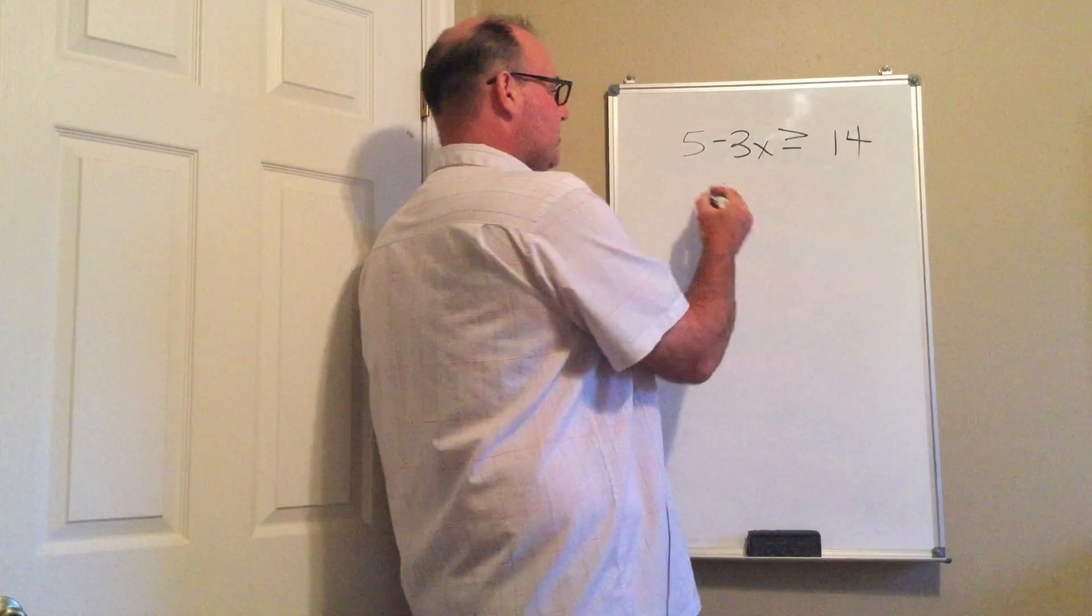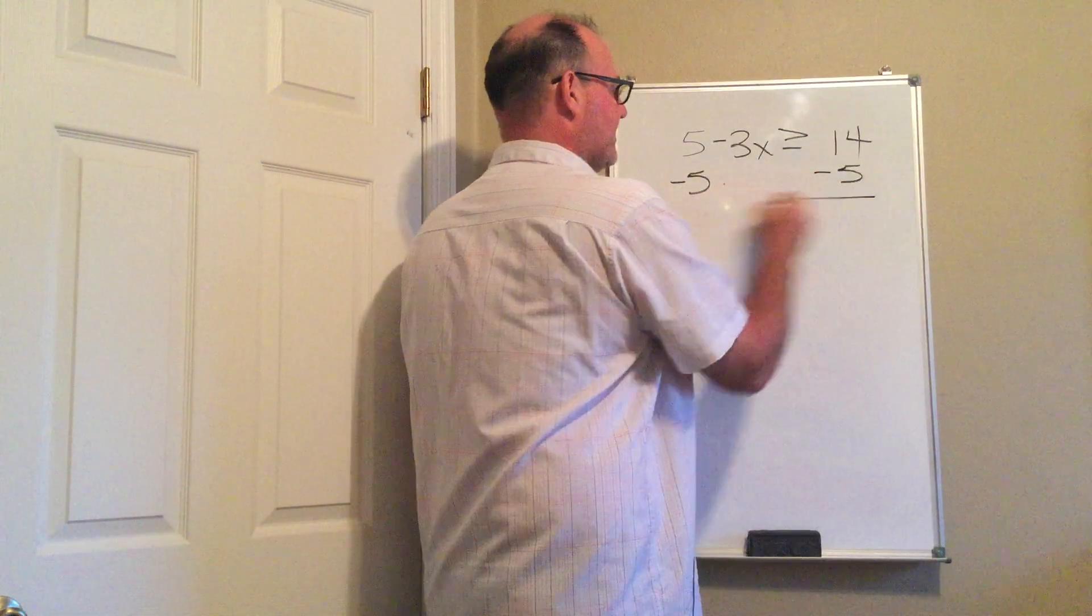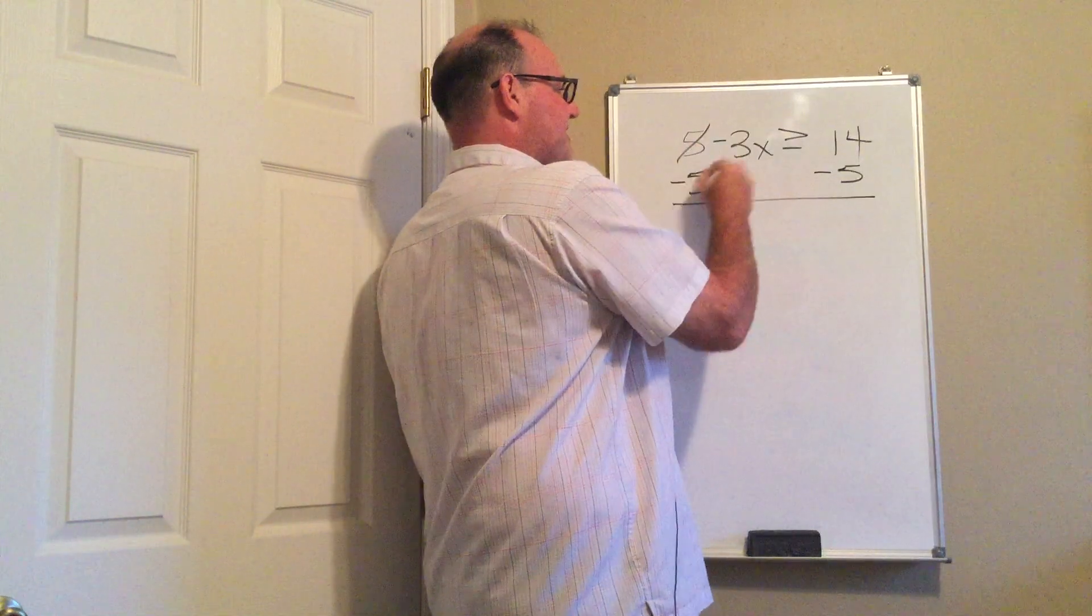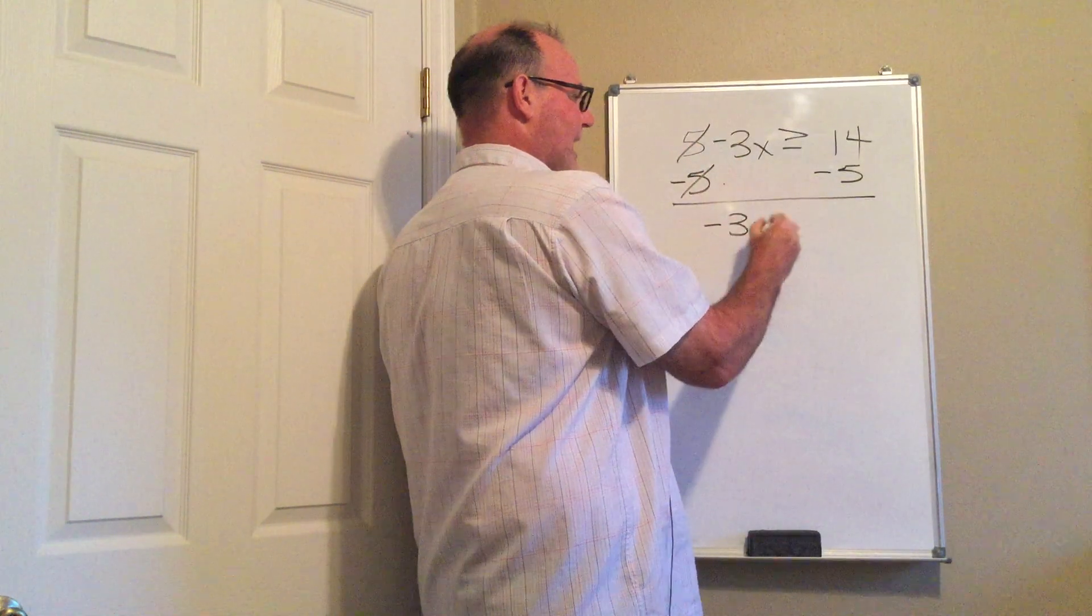First thing I'm gonna do is subtract 5 from both sides of this inequality. The fives cancel. I have negative 3x.